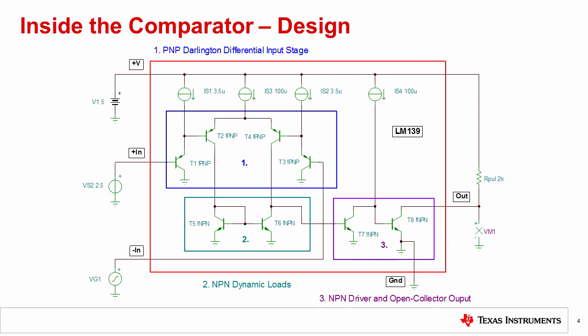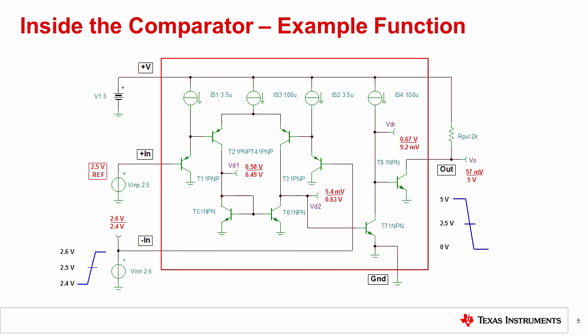During normal operation of the comparator, the differential input signal +IN minus -IN is amplified by the voltage gain of the input differential amplifier. The output of this differential stage is developed on T6 and is used to turn the output stage on or off, depending on the input polarity. To better understand the internal function, let's now apply some changing input signals to the comparator and see how the internal voltages change in the various states. In this example, we will be using the comparator in an inverting configuration with VREF connected to +IN and VIN connected to -IN.